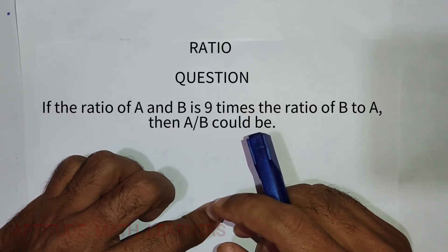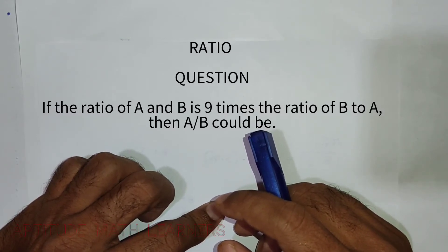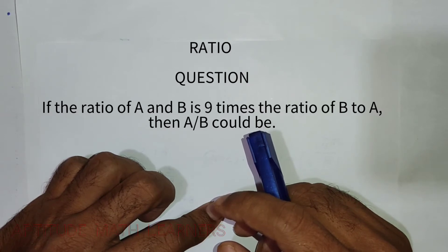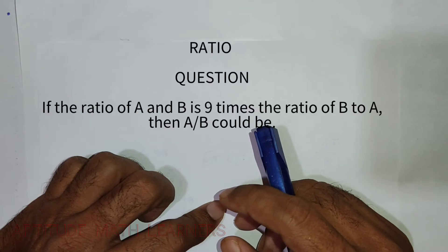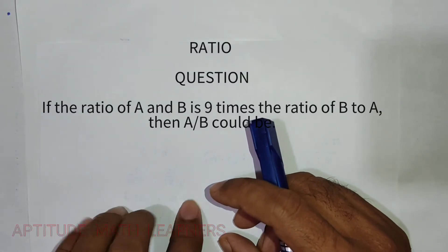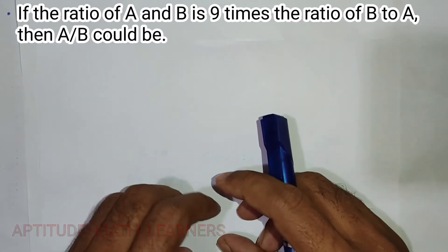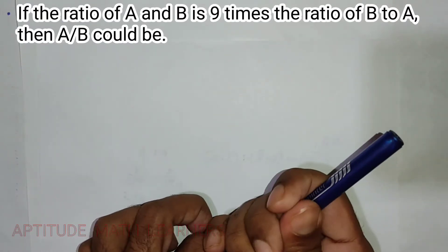If the ratio of A to B is 9 times the ratio of B to A, then A upon B could be? We have to find A upon B, but first you have to understand the question.